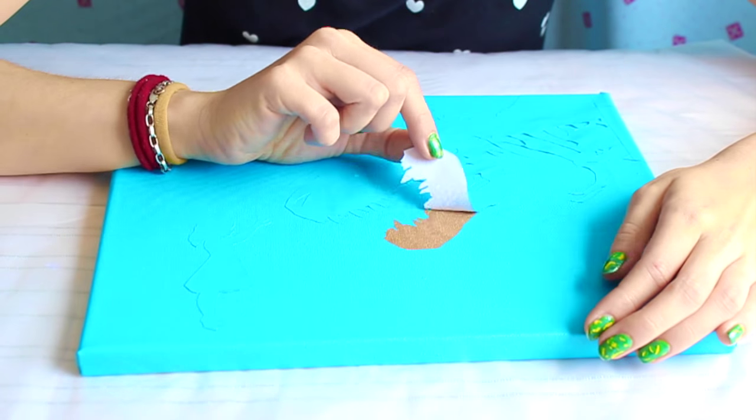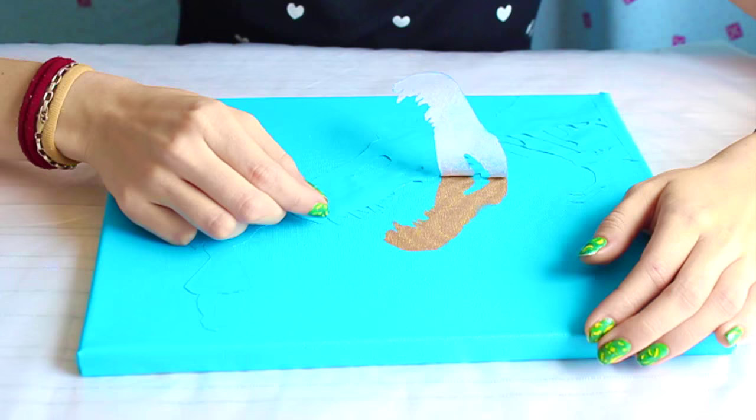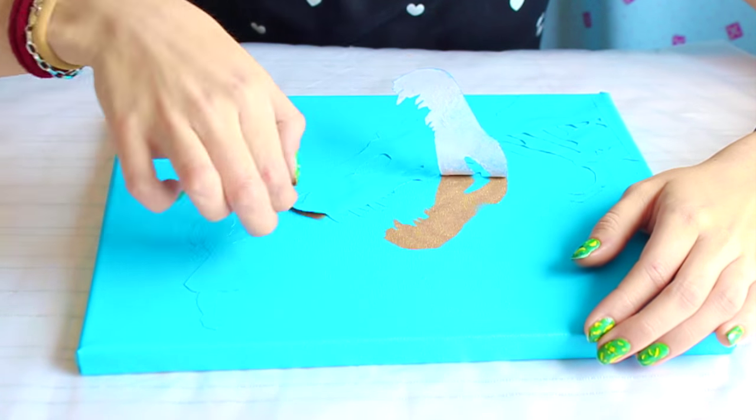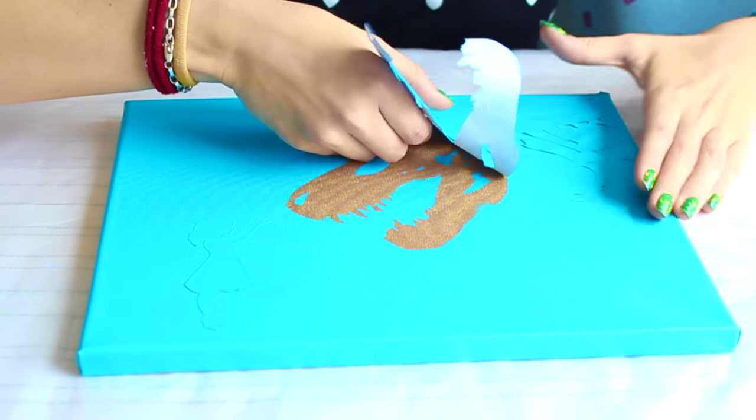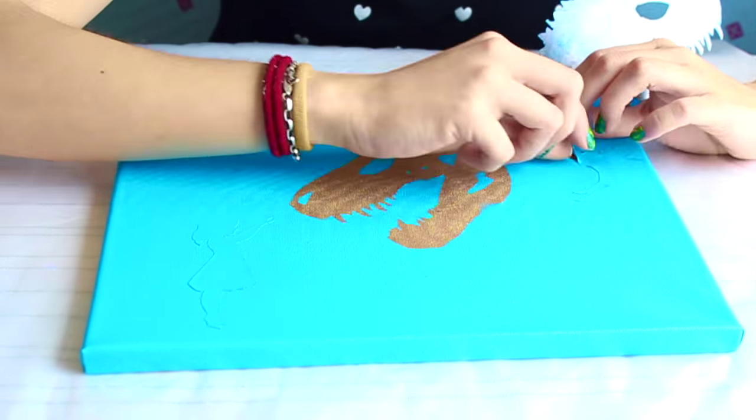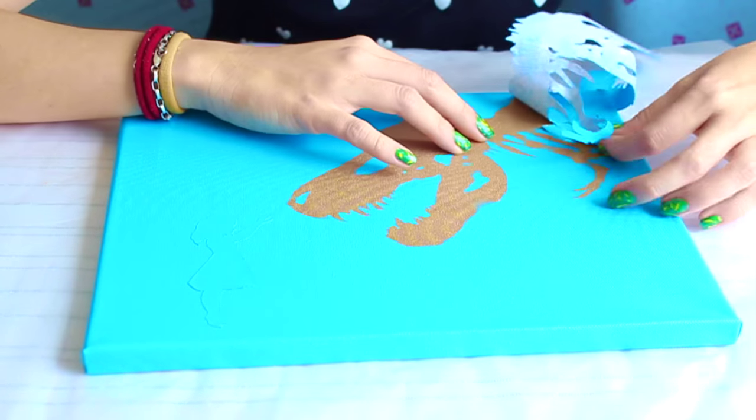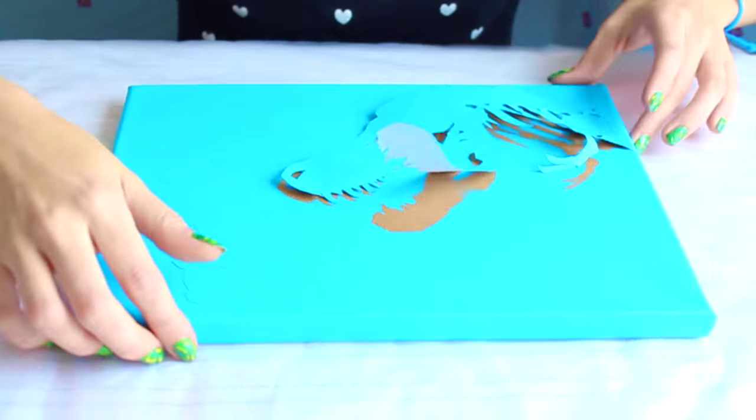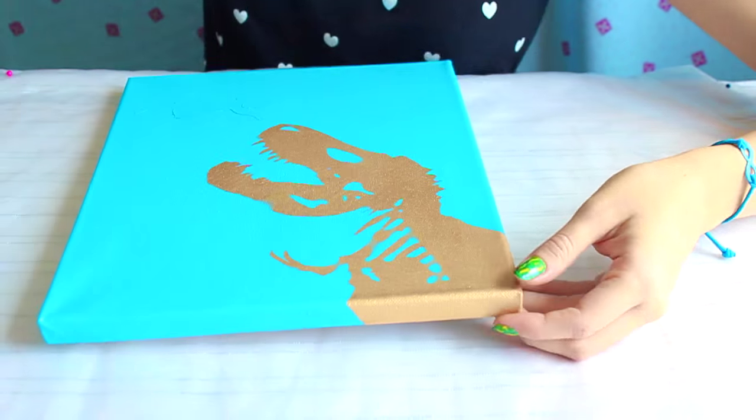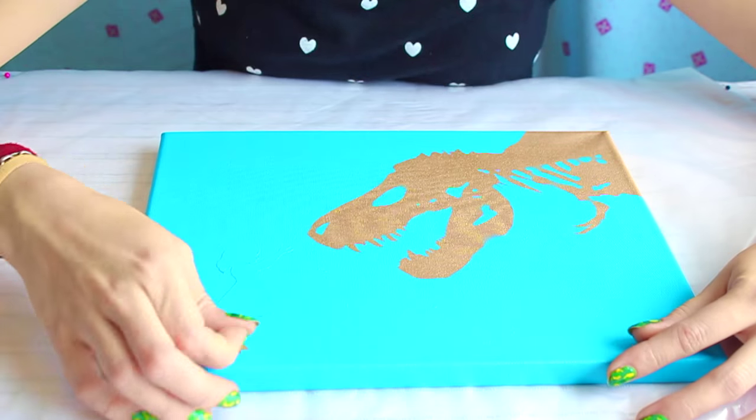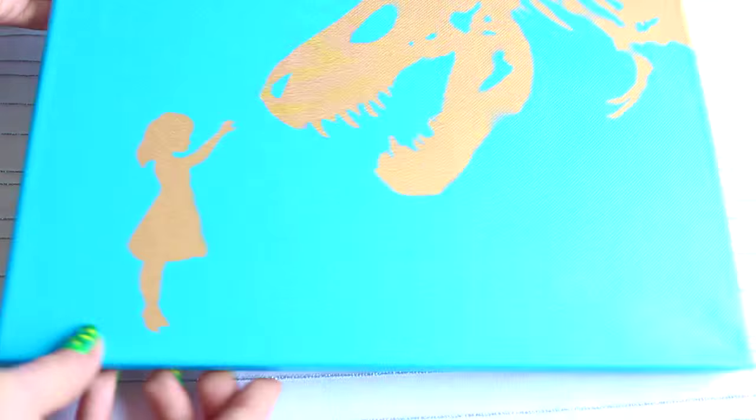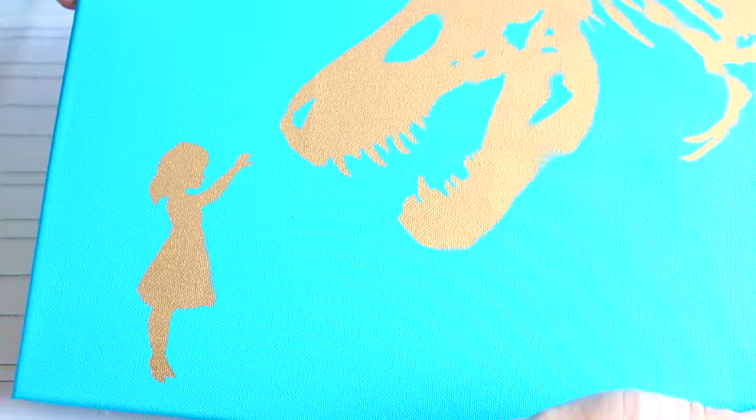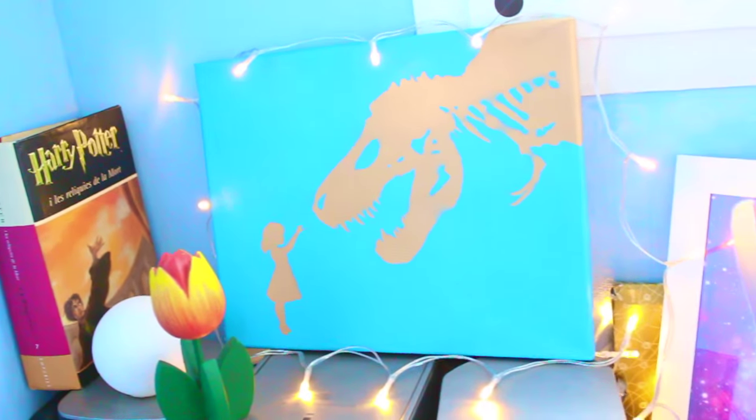Now it's time to peel the dinosaur to reveal the beautiful shape we have behind it. It was surprisingly easy to remove the paper. I was a little bit scared to see if I ruined my first coat, but not at all, just perfect. Since I tend to overdo things with too much decoration, this time I decided to keep it simple. But seriously, I love it! It looks just amazing!